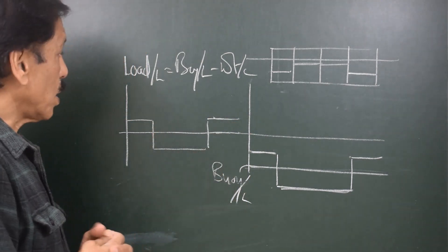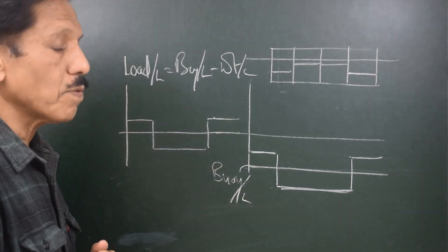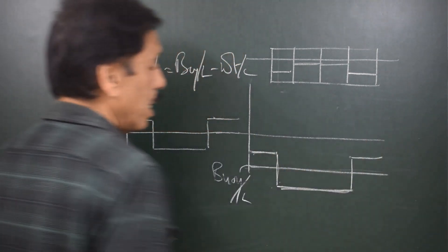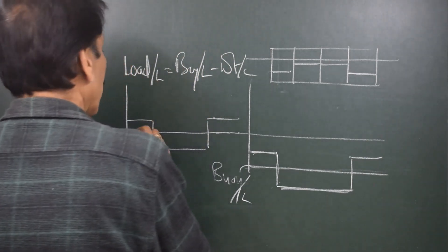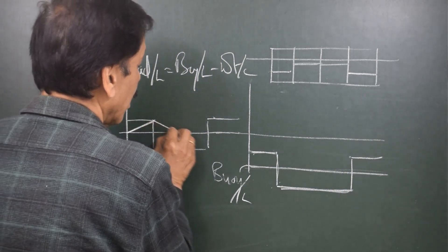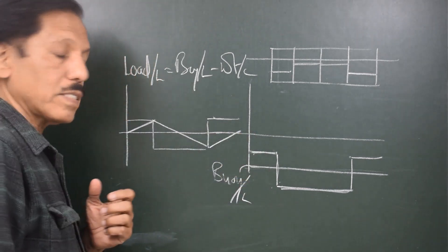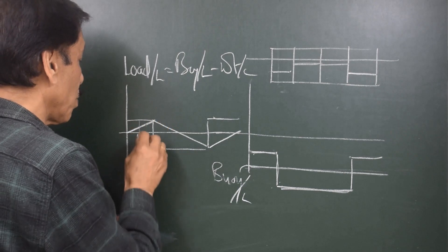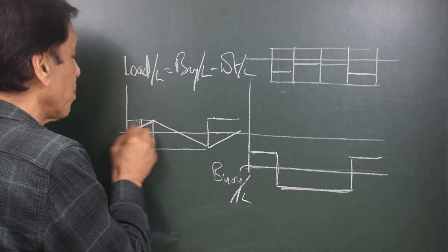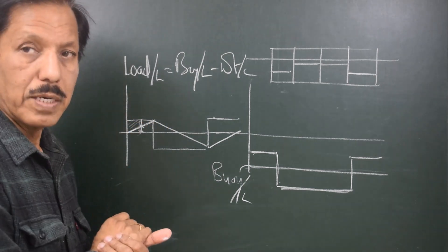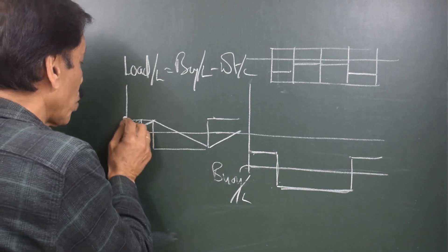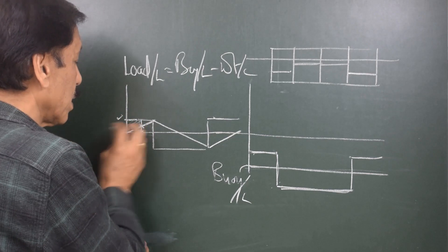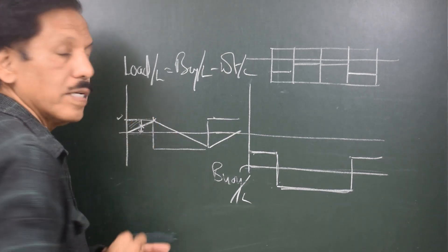The load curve is the difference between the buoyancy and weight. If we have put both curves on the same side, the appearance of the weight curve with respect to the buoyancy line is actually the load curve. Now if we calculate the area under the load curve and plot another curve such that at any given point the area under the load curve to the left of the point under consideration is the ordinate of the shear force curve — that means totalling up the area under the load curve up to a given point gives the shear force value at that point.